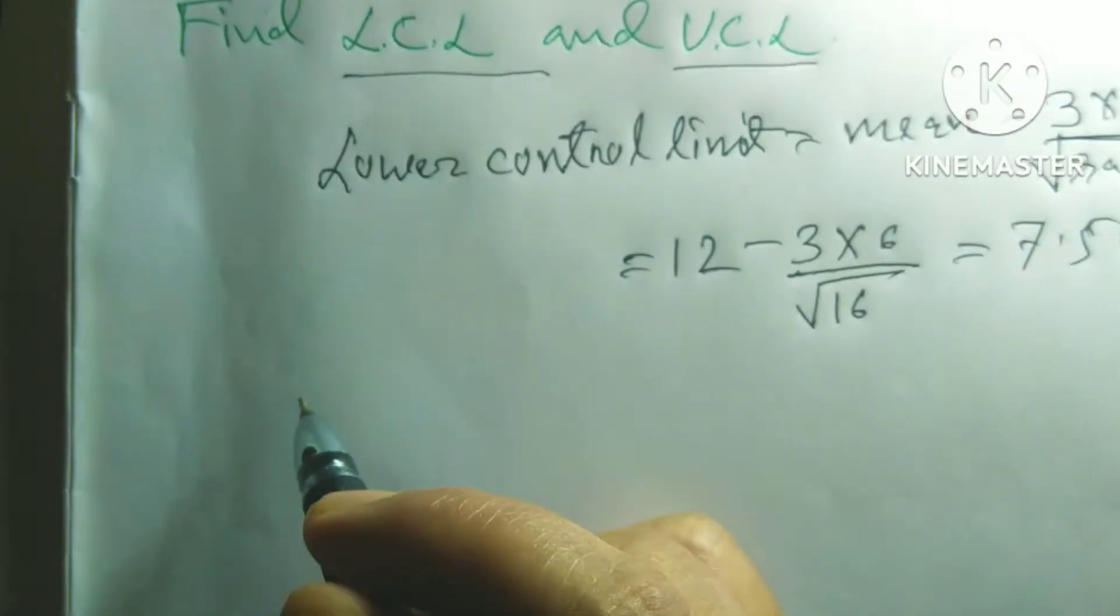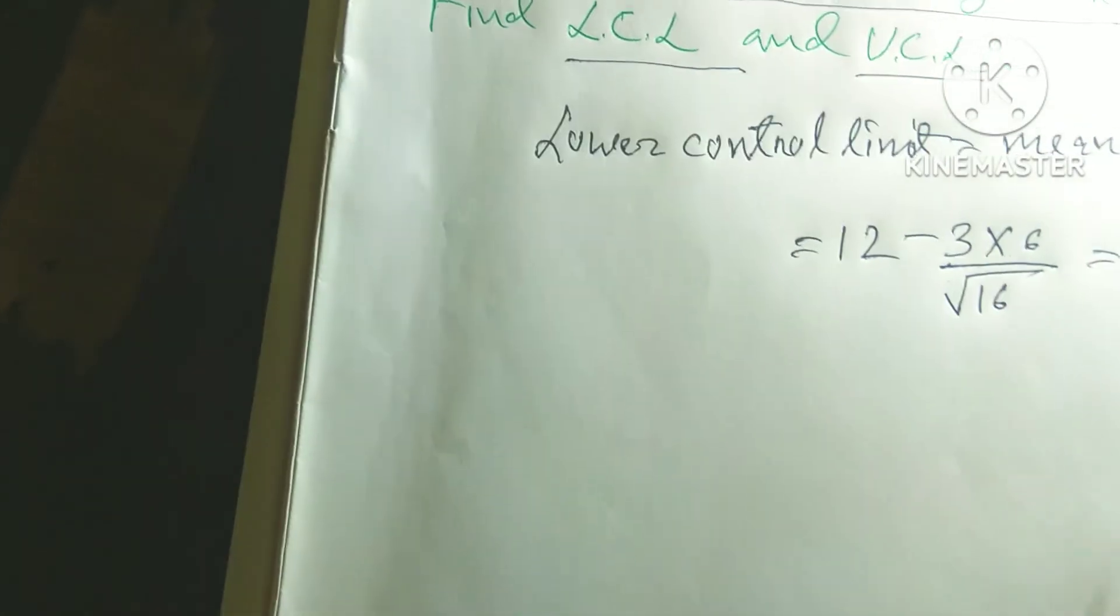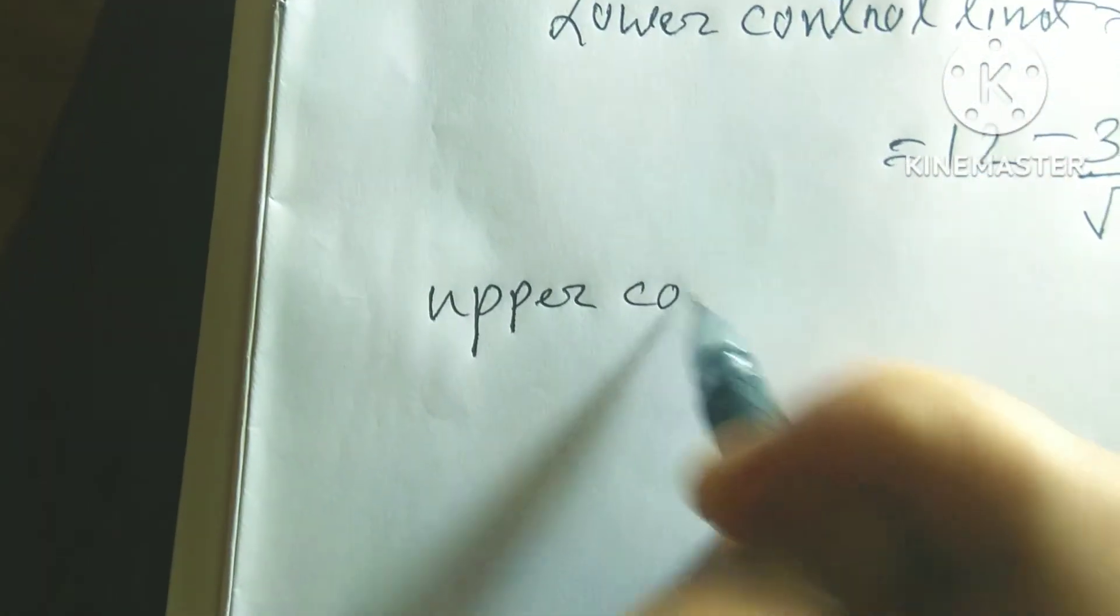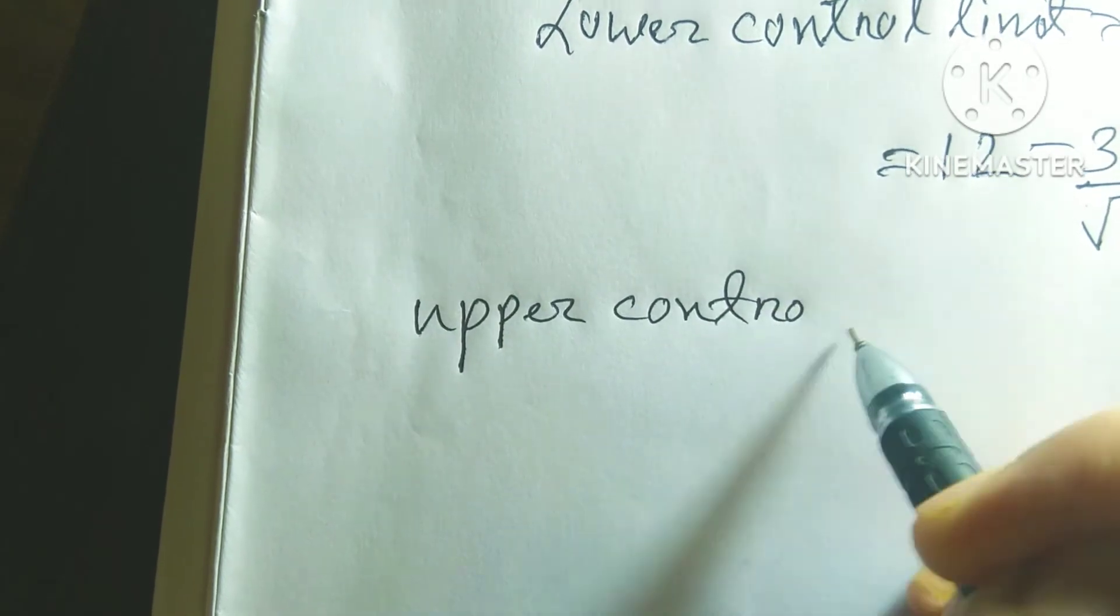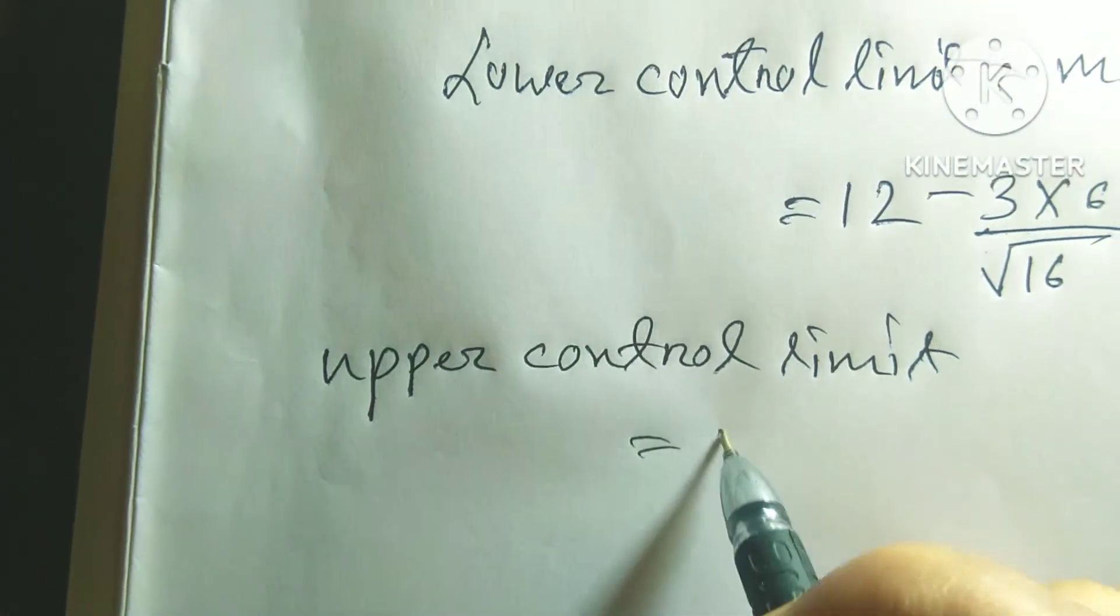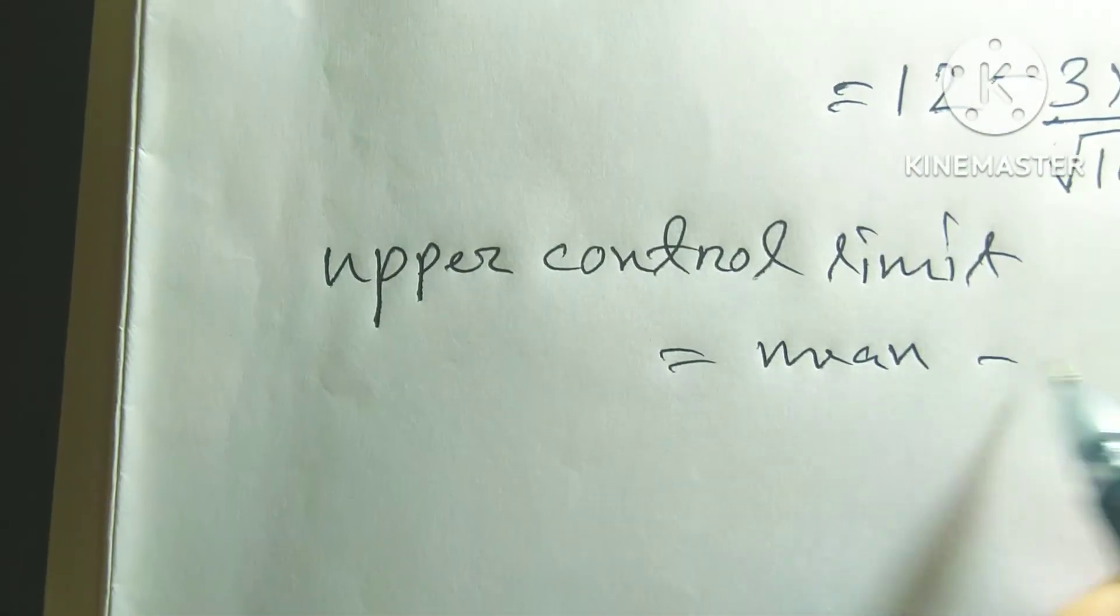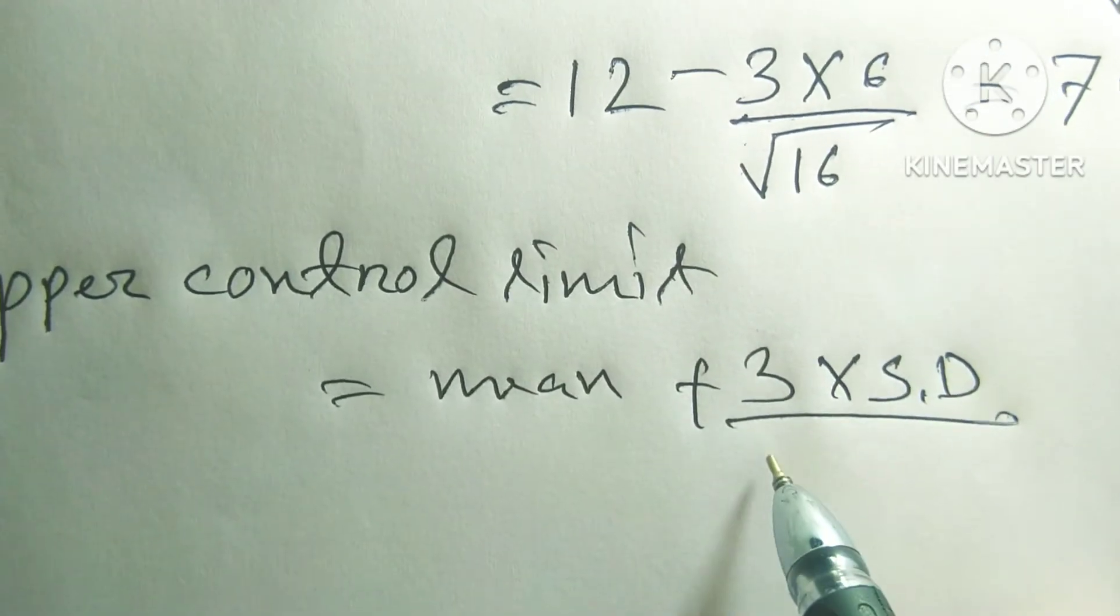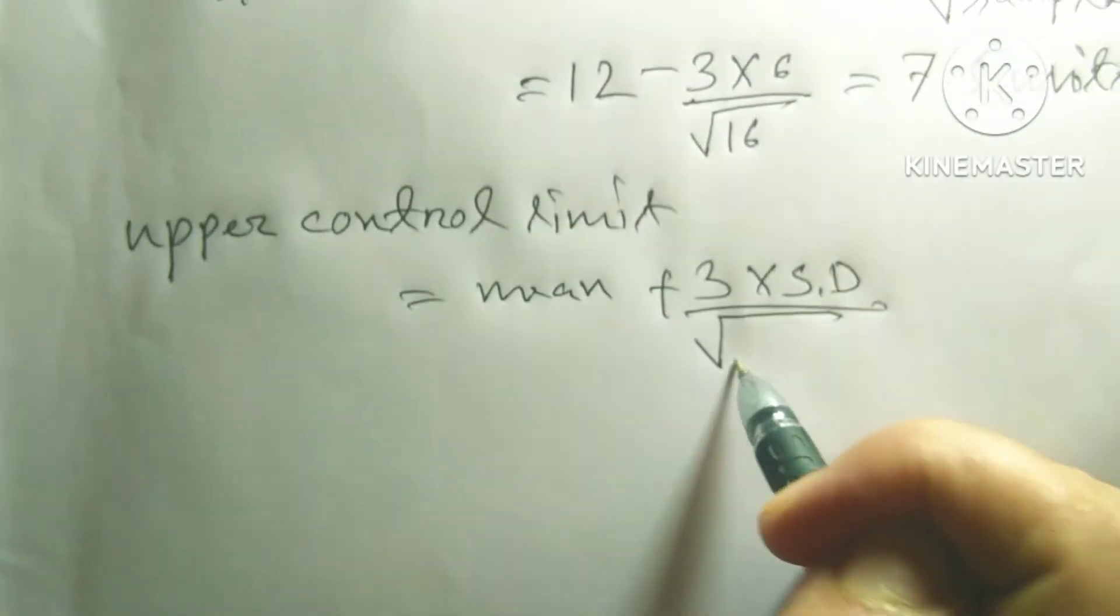Next, upper control limit, upper control limit equals to mean plus 3 into standard deviation divided by root over sample.